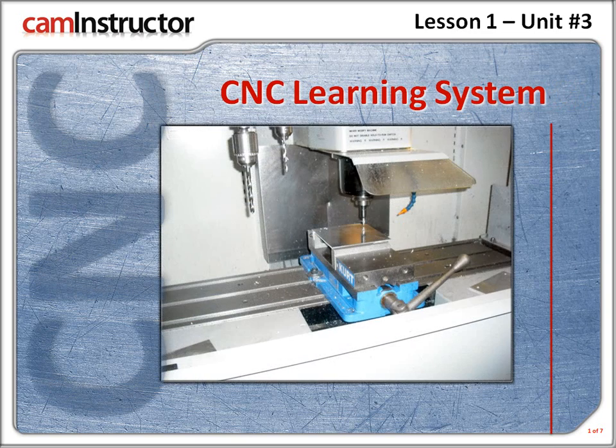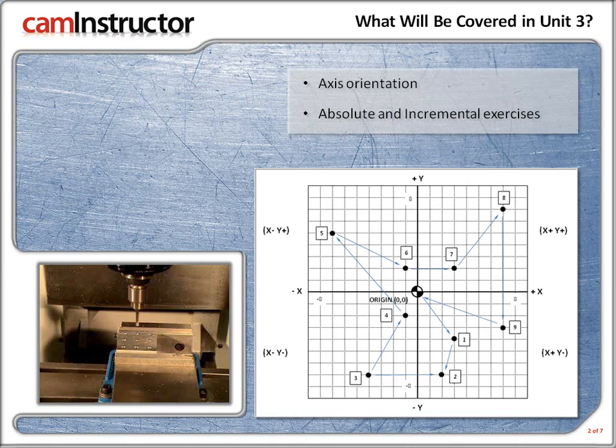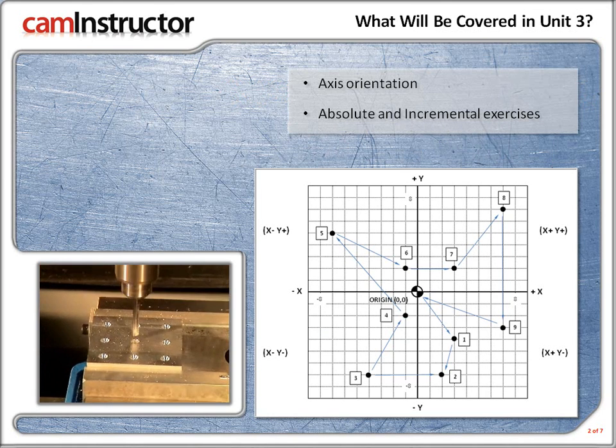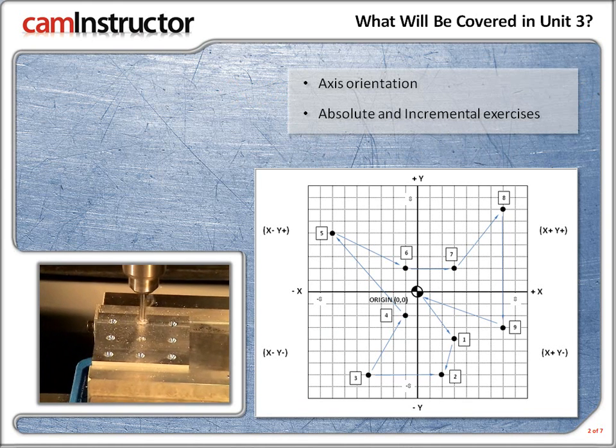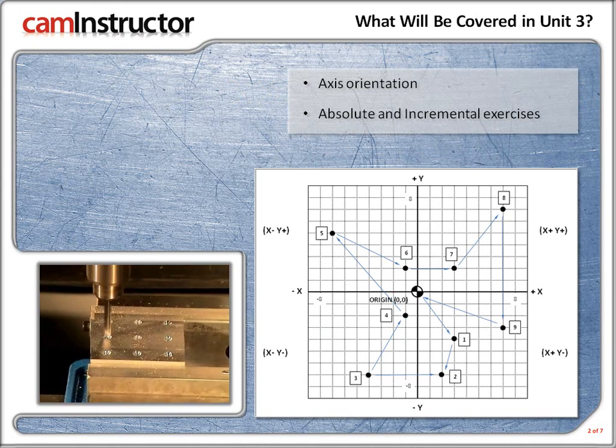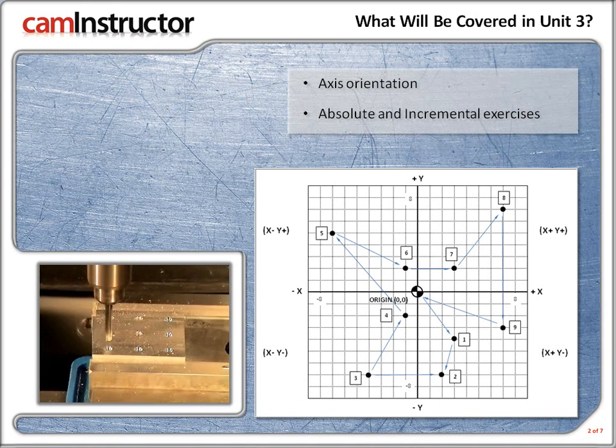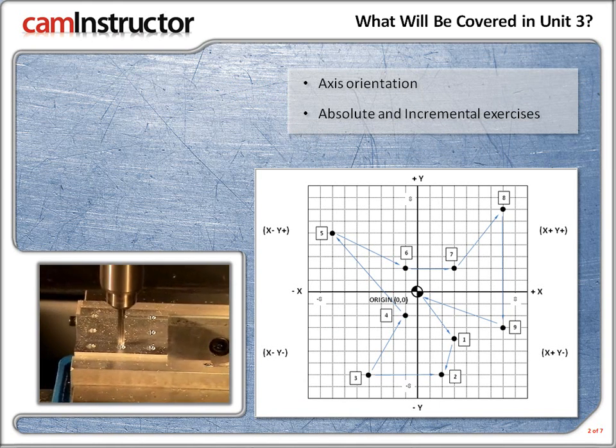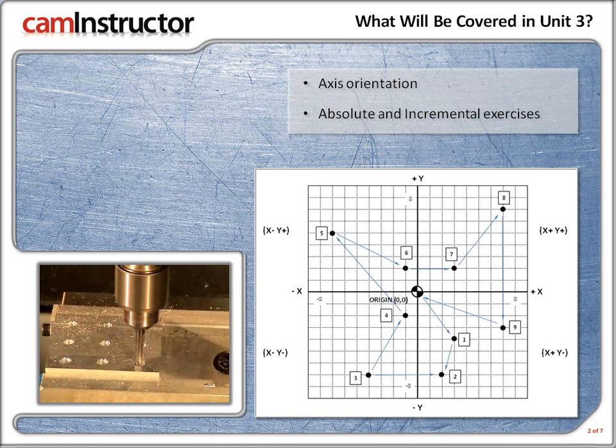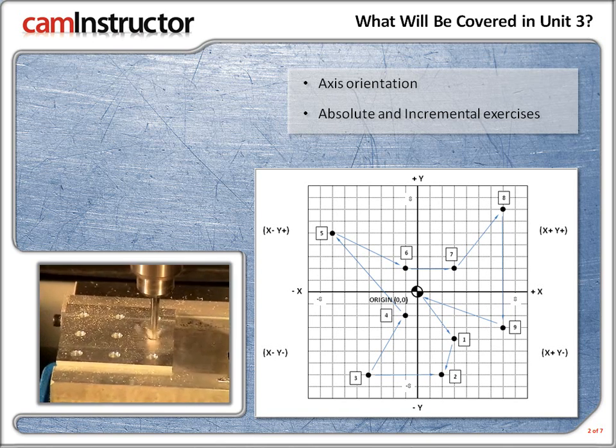Hello and welcome! In this video we'll start to look at the axis orientation used on a 3-axis CNC milling machine. We'll also be working through a series of exercises that will help us figure out the difference between absolute and incremental coordinates. So let's get started.